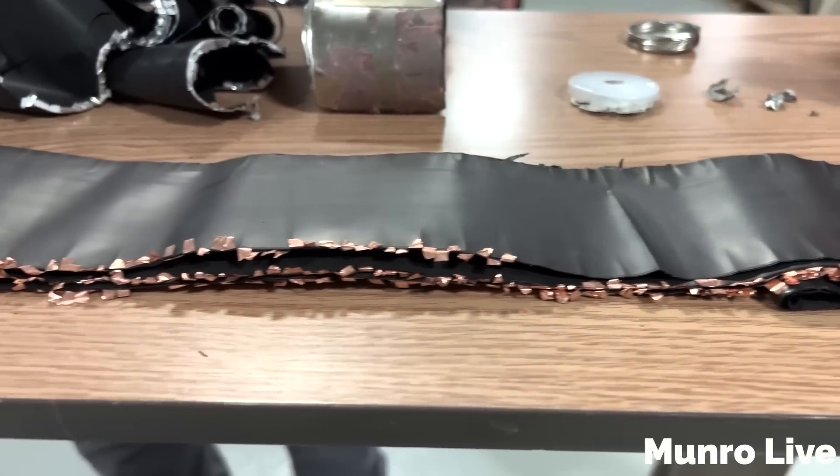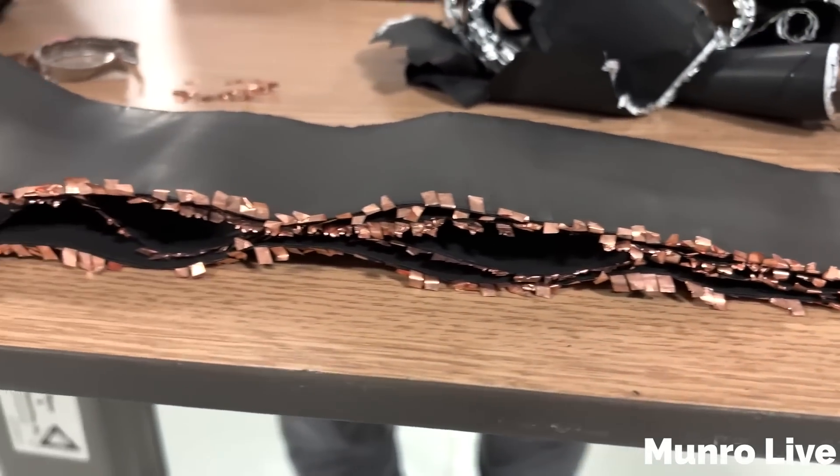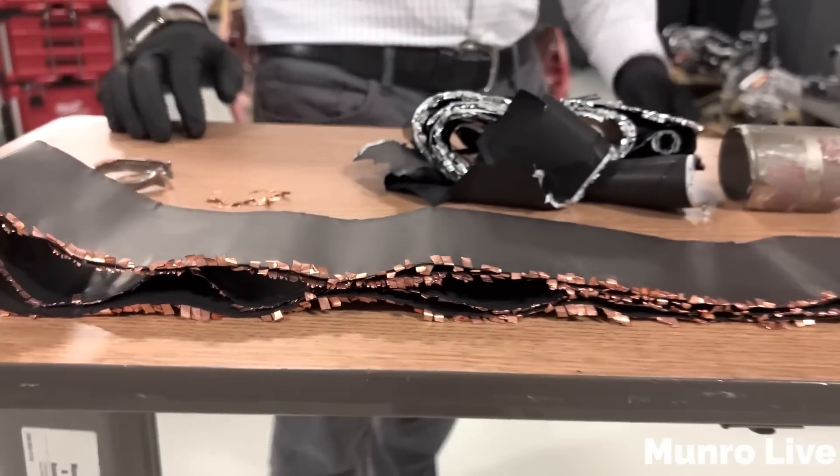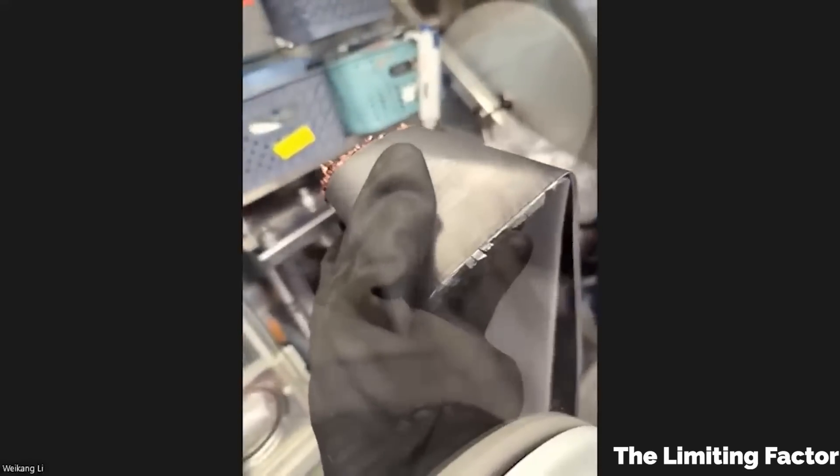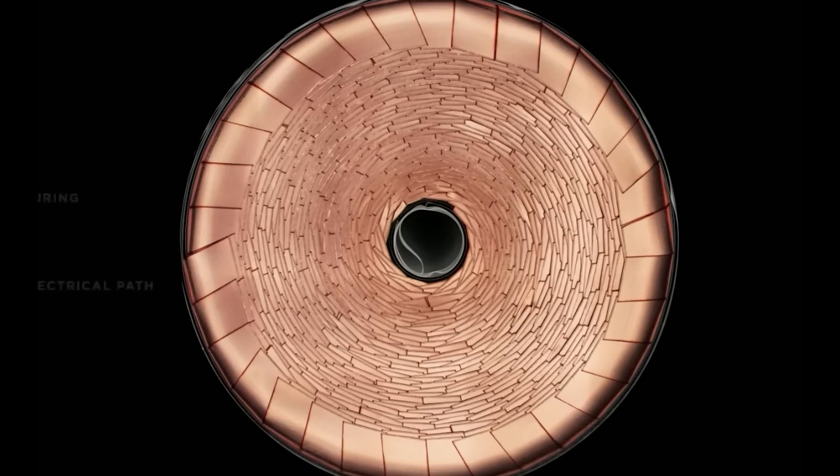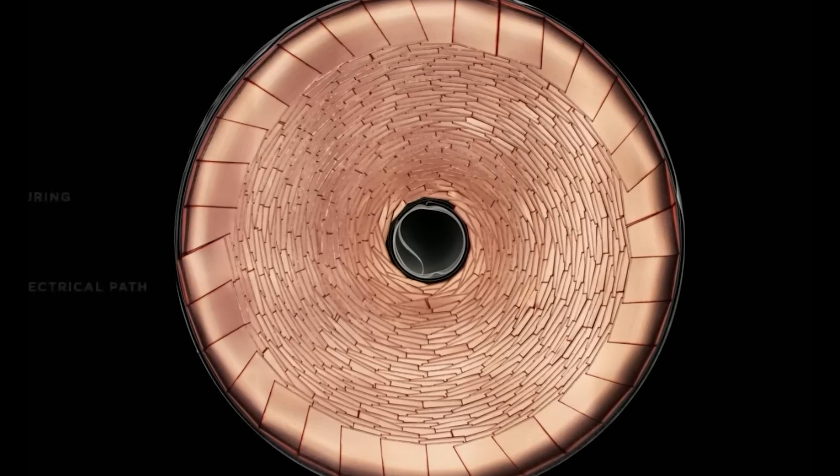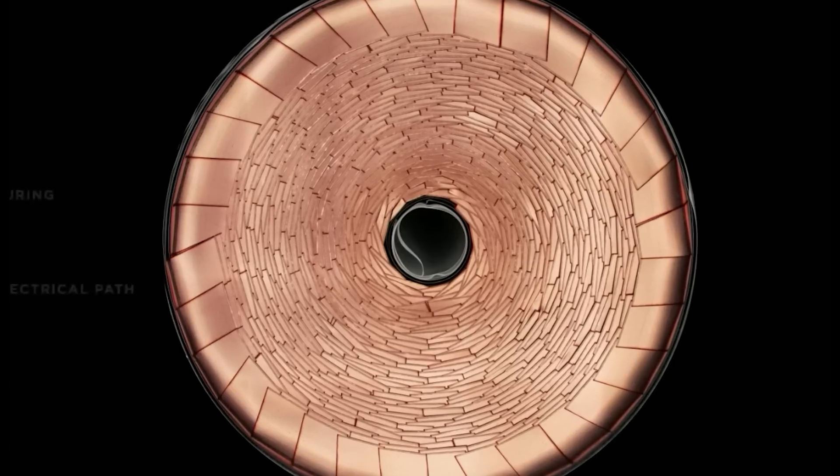Tesla did away with those two singular tabs and actually replaced them with a whole army of miniature tabs. The term tabless is complicated, but what they do is perforate along one side of the entire cathode and anode sheet from start to finish with tiny cuts to create little shingles all along the length of the electrode. And then, when they get rolled up, all of the little shingles are folded over towards the center and create one massive contact that spans the entire width of the cell.